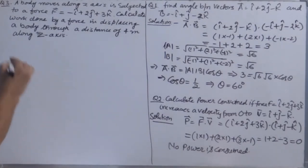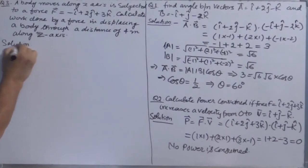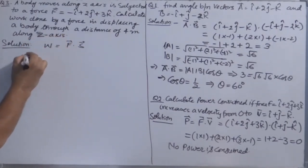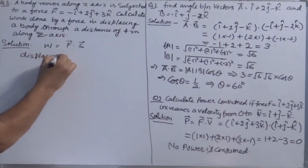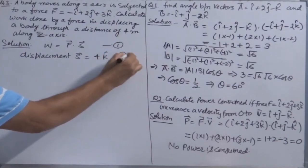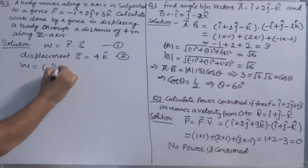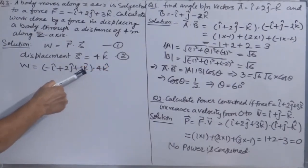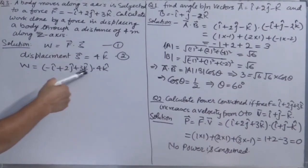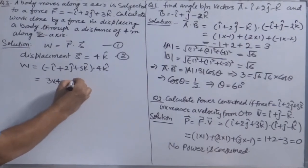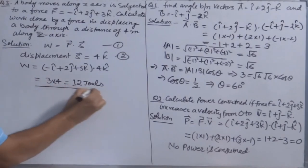Third problem: a body moves 4 metres along the z-axis with force F = −î + 2ĵ + 3k̂. Work done = F·s. Displacement is along the z-axis so s = 4k̂. Taking the dot product, there is no î or ĵ component in s, so those terms are zero. Only k̂·k̂ is nonzero: 3 × 4 = 12 joules. That is how you solve problems related with dot product.